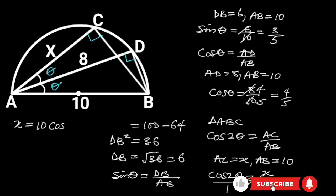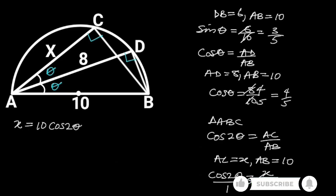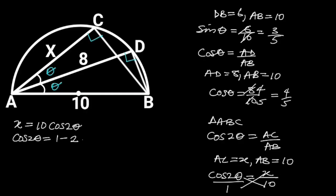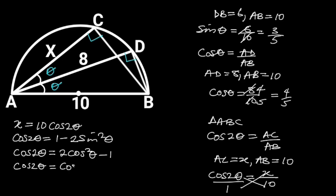The double angle formula gives us several identities: cos 2 theta equals 1 minus 2 sine squared theta; cos 2 theta equals 2 cos squared theta minus 1; cos 2 theta equals cos squared theta minus sine squared theta. For this video we are going to use two of these formulas. Substituting cos 2 theta with 1 minus 2 sine squared theta, X will be equal to 10 times (1 minus 2 sine squared theta).